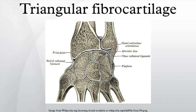The TFCC is a major stabilizer of the distal radioulnar joint (DRUJ). To control forearm rotation, the DRUJ acts in concert with the proximal radioulnar joint. The connection between the distal radius and the distal ulna maintains the congruency of the DRUJ. This attachment is mainly created by the RULs of the TFCC, which support the joint through its arc of rotation.